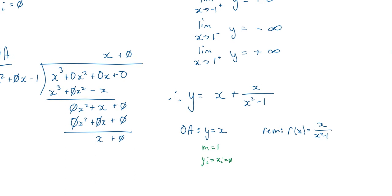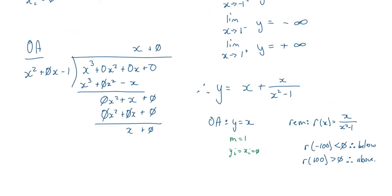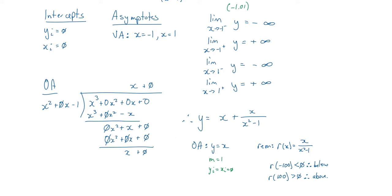The remainder term is r = x/(x² − 1), and we use this to test behavior around the oblique asymptote. At x = −100: the top is negative and the bottom is positive, so r < 0, meaning we are below the oblique asymptote. At large positive x, r > 0, so we are above the oblique asymptote. Remember: you have either oblique or horizontal asymptotes, not both.